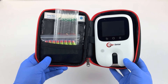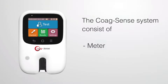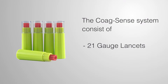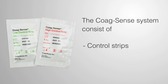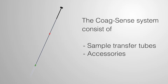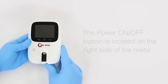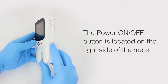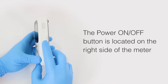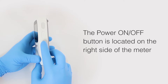Everything you need is provided in the kit, delivered in a carrying case, which includes the meter, lancets, single-use PT strips, control strips, sample transfer tubes, and certain accessories required for testing.